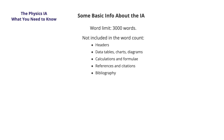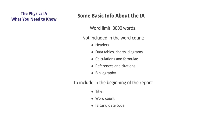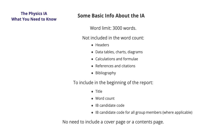Here is what you need to include at the beginning of your report. If anything is unclear, just ask your teacher or DP coordinator. The things to include are the title, the word count, your IB candidate code, and the candidate code for all group members where applicable. Finally, there's no need to include a cover page or a contents page. If you're ready to begin your IA work, just scroll down and hit the getting started button.